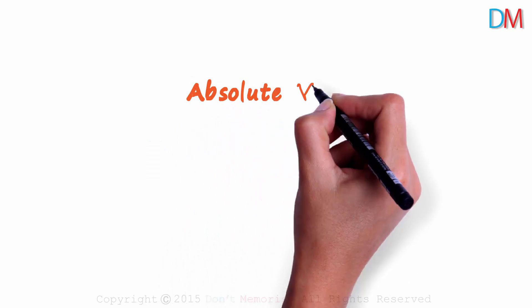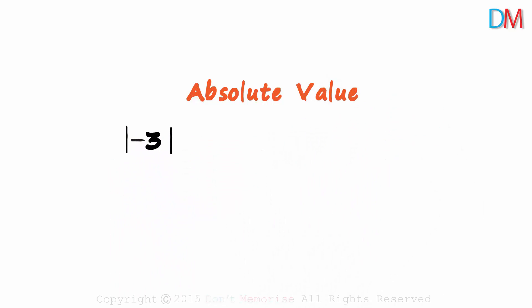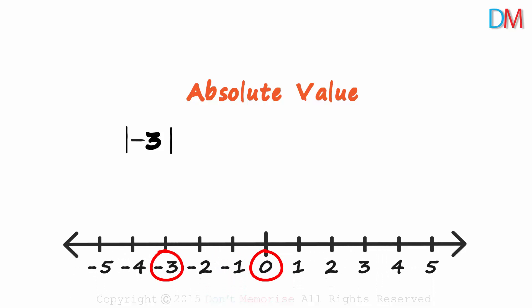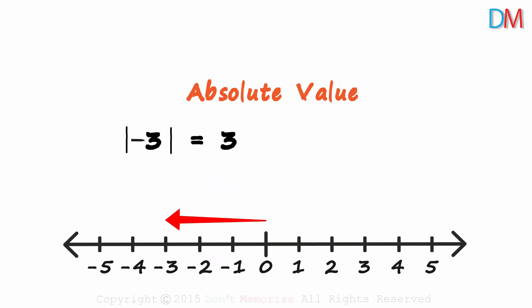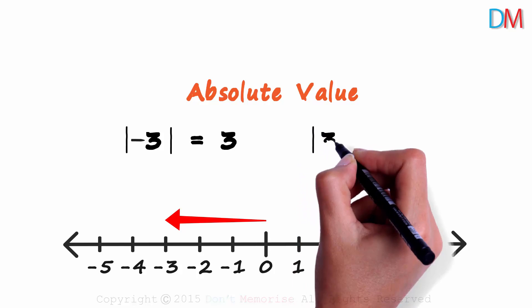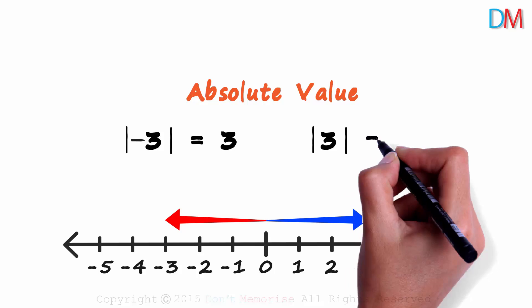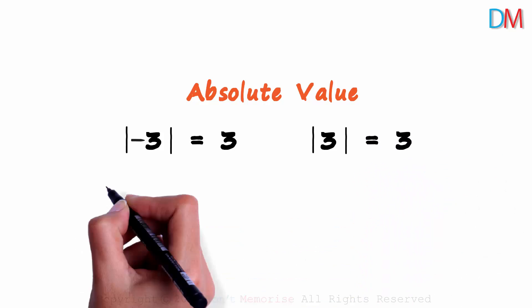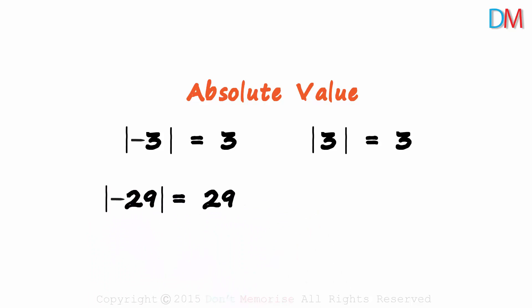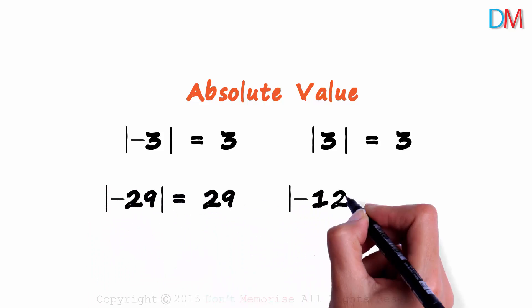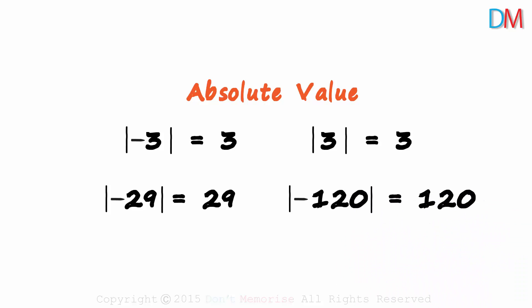We have seen what absolute value of a number means. What is the absolute value of minus three? It tells us the distance of minus three from zero on a number line. As minus three is three units away from zero, its absolute value will be three. And the absolute value of three will also equal three, since three is also three units away from zero. The absolute value of minus 29 will be 29, and the absolute value of minus 120 will equal 120, and so on.